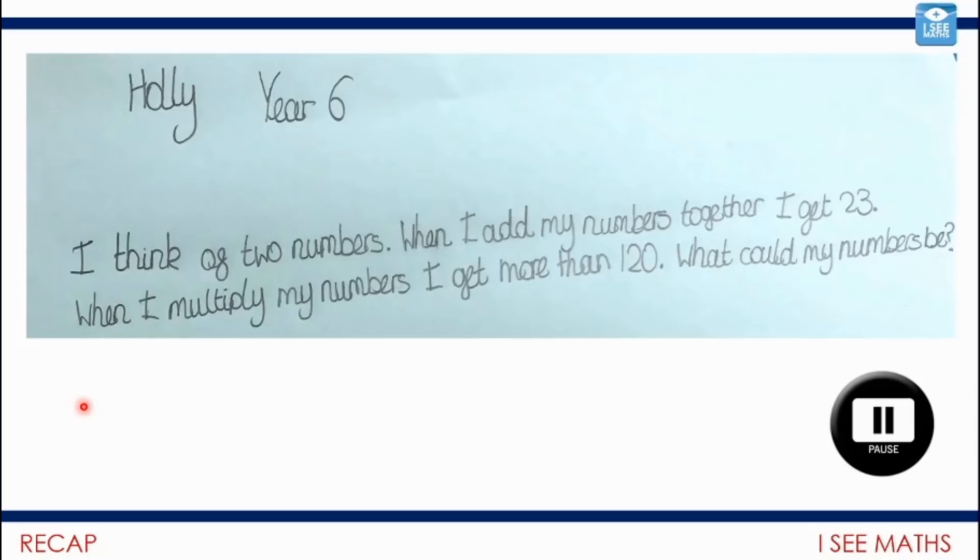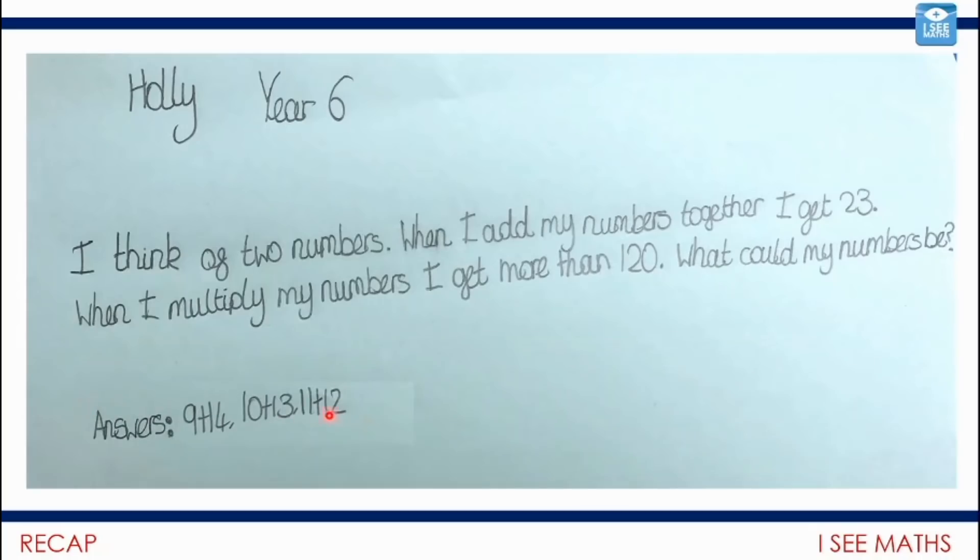Okay, let's have a little look. I wonder what you found. Holly has given some answers as well, different answers and interesting ones here. So 11 plus 12 will be the largest product we can get with two numbers that add to make 23, and then a slightly smaller product, which we explained why yesterday, 10 and 13.